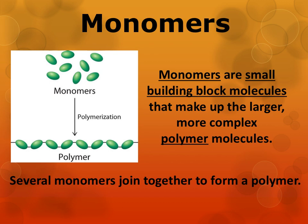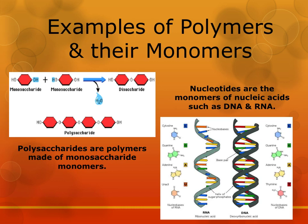Some of those huge molecules are made of chains of smaller molecules. These larger molecules are called polymers, and the smaller building blocks are called monomers. This picture shows several small green monomers at the top that are organized or assembled into a more complex larger polymer at the bottom. Many carbohydrates are also polymers. An example would be a polysaccharide, which is composed of monosaccharide monomers.